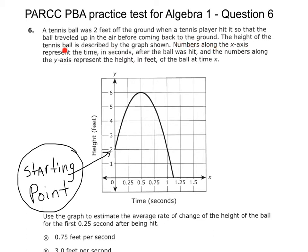The height of the tennis ball is described by the graph shown. Numbers along the x-axis represent time, the amount of seconds passing after the ball was hit, and the numbers along the y-axis represent the height. So these numbers tell you how high up and down the ball went. So we've read all that, and we still don't even know what they want us to tell them.